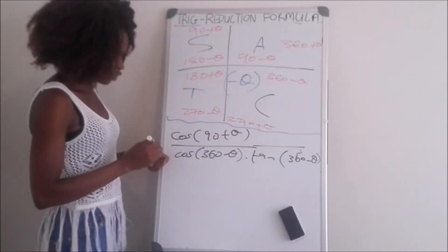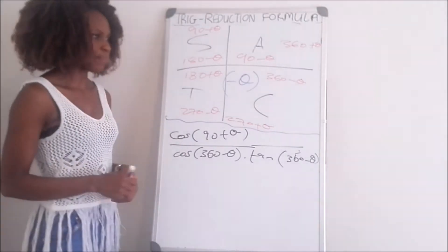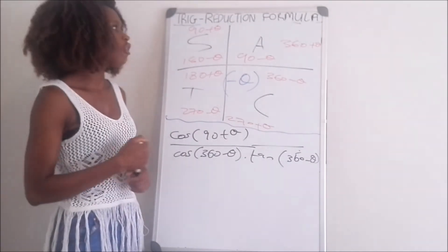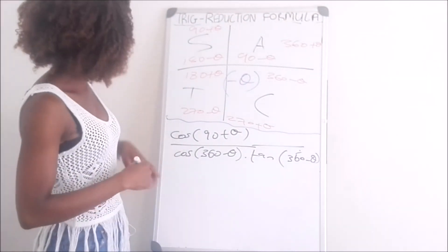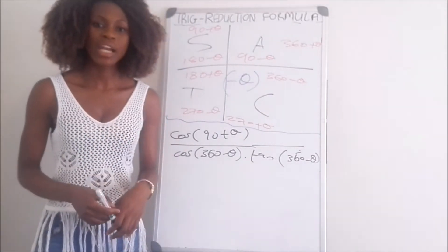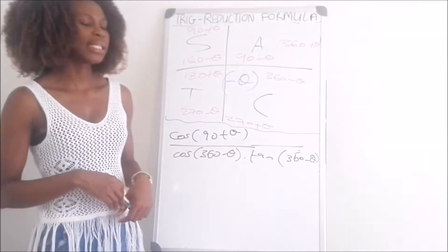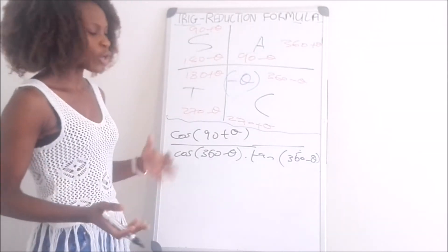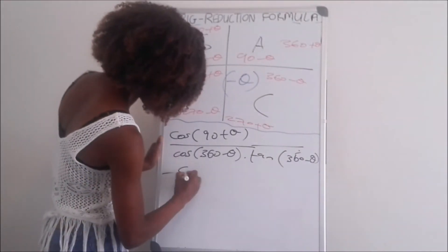For the first term, we are dealing with a co-function because it's 90 plus theta. 90 plus theta is found in the second quadrant, where only sine is positive. Since we have cos and it's a co-function, cos changes into sine — but sine is negative in the second quadrant, so the answer will be negative sine theta.